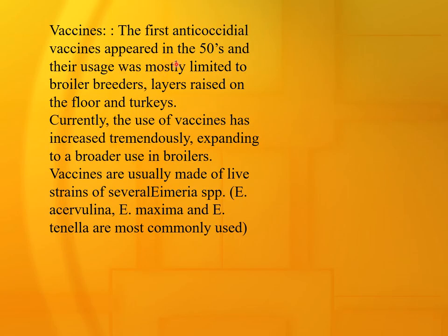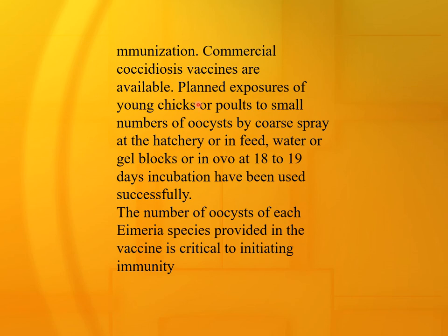Vaccines: the first anticoccidial vaccine appeared in the 1950s, and their use was mostly limited to broiler-breeder and layer flocks raised on the floor. The use of vaccines has since increased tremendously, expanding to broader use in broilers. Vaccines are usually made of live strains of several Eimeria species — Eimeria acervulina, Eimeria maxima, and Eimeria tenella are most commonly used. Commercial coccidiosis vaccines are available and expose young chicks or poults to small numbers of oocysts by coarse spray at the hatchery, in feed or water, gel blocks in chick boxes at one day of age, or in ovo at 18 to 19 days incubation.